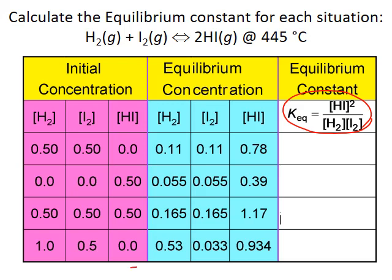In pink, we have the initial concentrations of the reactants and products in each reaction container — these represent the concentrations before we reach equilibrium. Highlighted in aqua are the equilibrium concentrations — the steady-state concentrations we reach after we've let the reaction progress. Notice that we have different equilibrium concentrations for each trial, reflecting our different starting conditions. Since all these containers are at the same temperature, the ratio of concentrations of products to reactants should still give us the same constant value throughout.